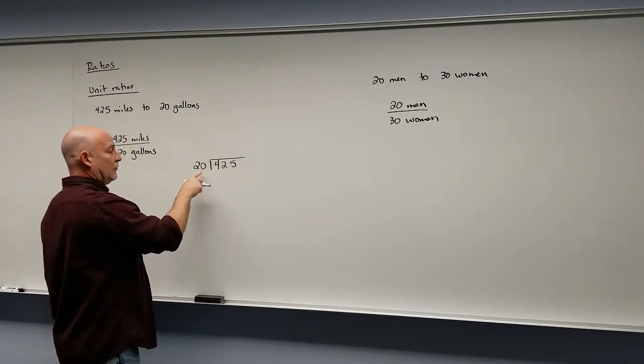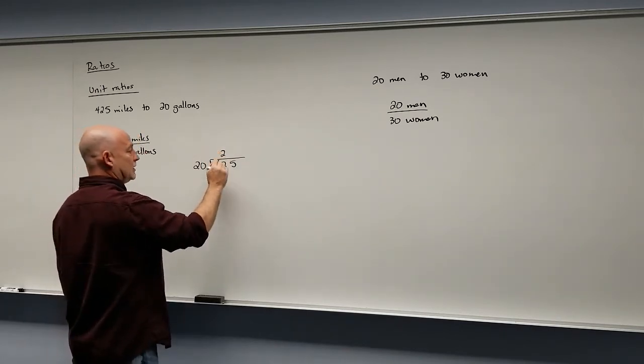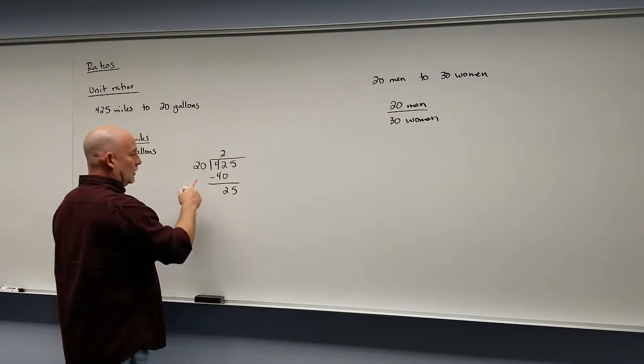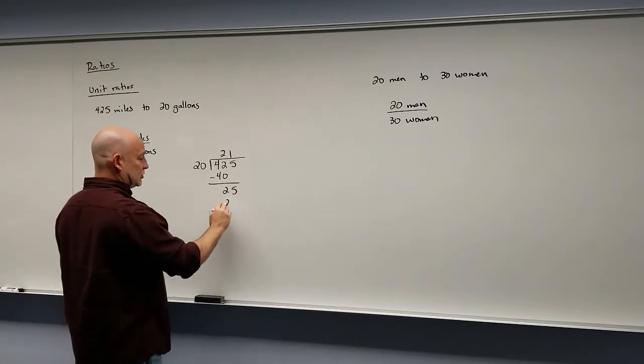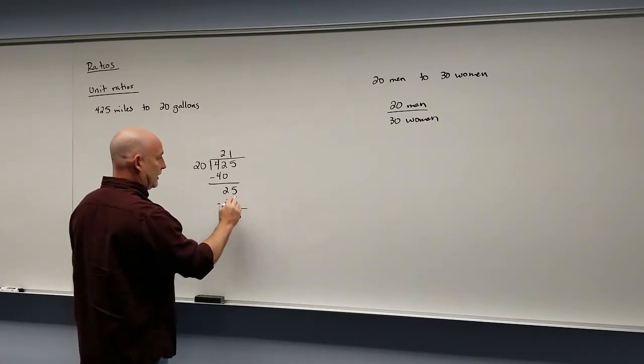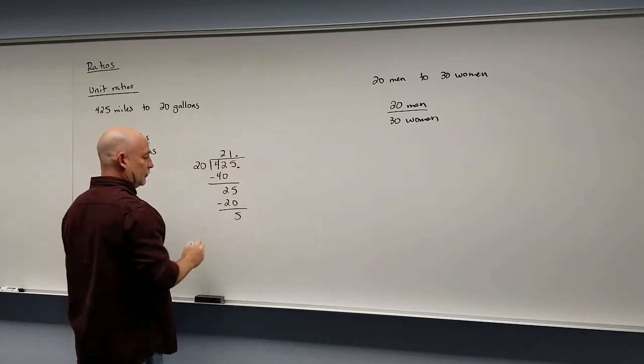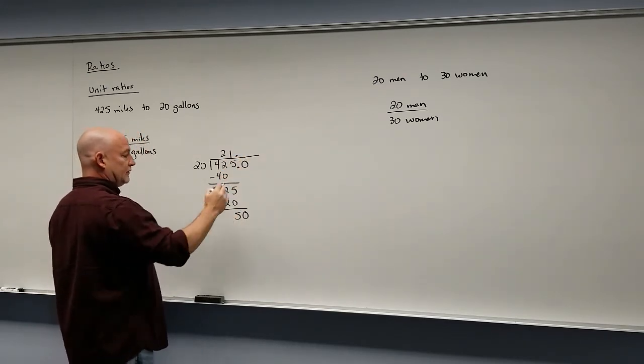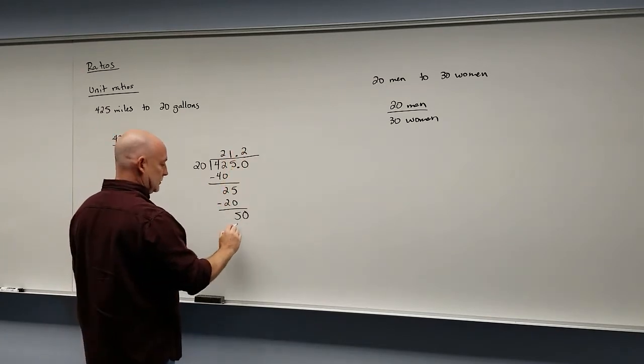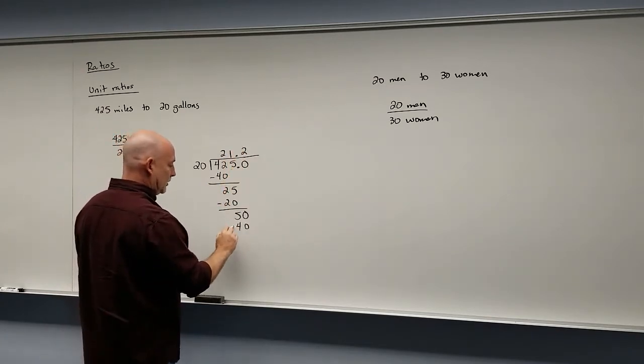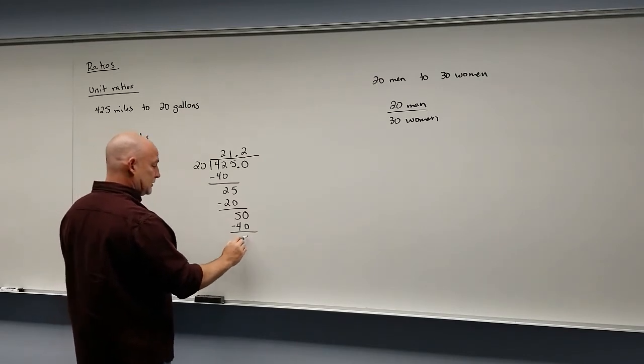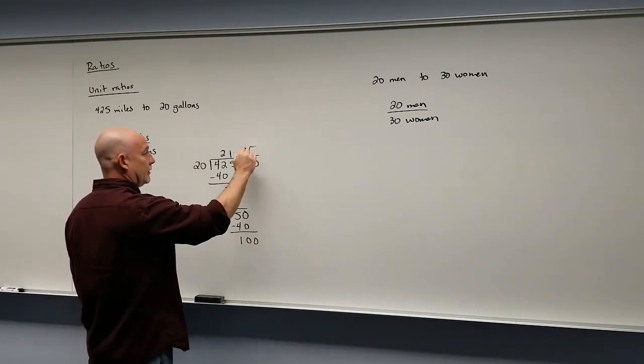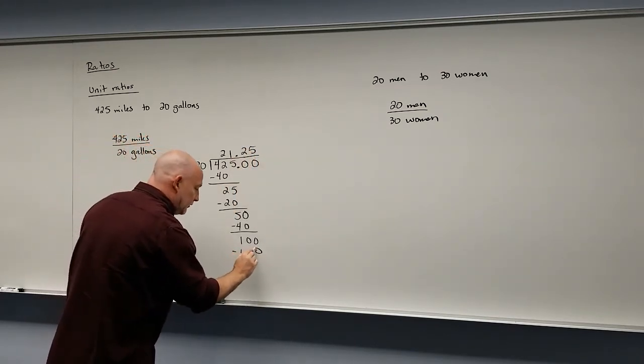Let's see. 20 doesn't go into 4. 20 goes into 40 twice. So 40 and subtract. 20 goes into 25 once. So that's 20. Subtract. That's 5. Now we've got to put our decimal here. Pull it right up. Add a 0. 20 goes into 50 again, twice. That gives me 40. Subtract. That's 10. Add a 0. 20 goes into 100 five times.